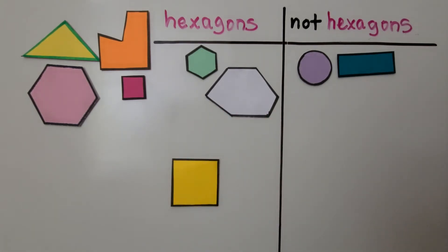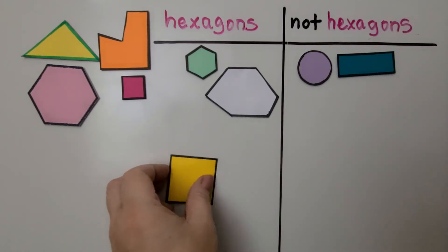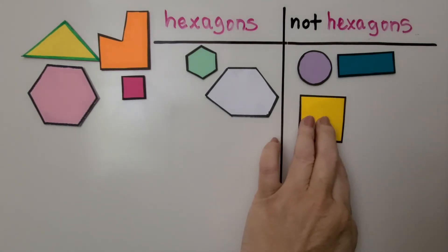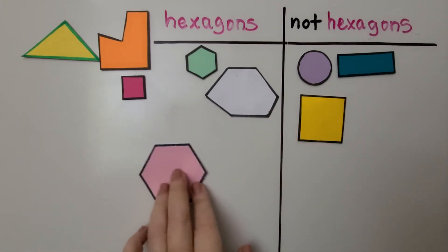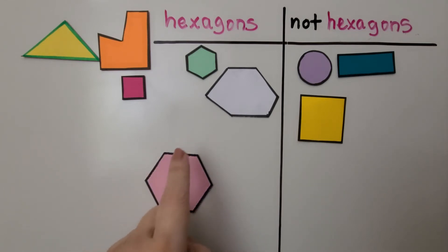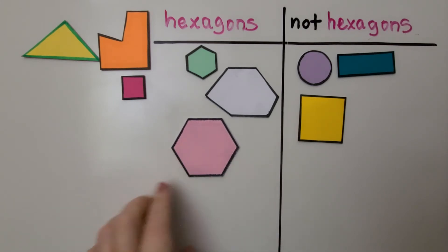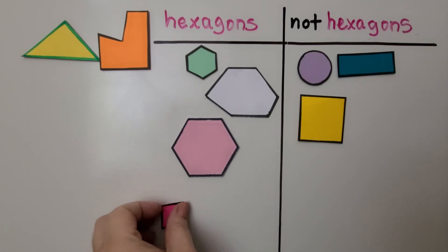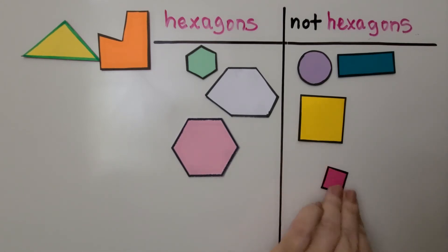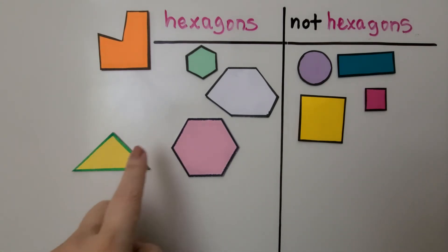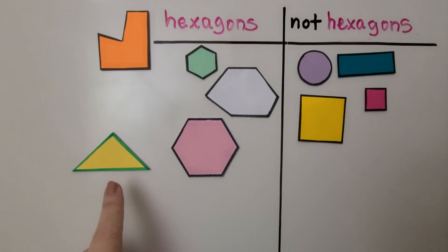Do you know what this one is? If you said square, you're right — that's a square, not a hexagon. Squares have four sides of equal length. What about this one? We can count: one, two, three, four, five, six — yes, that's also a hexagon. Here we have another square — not a hexagon.